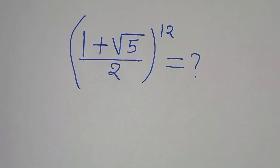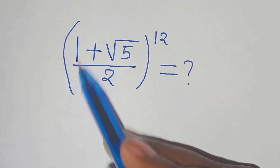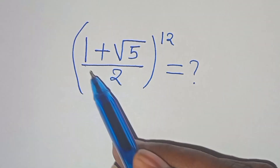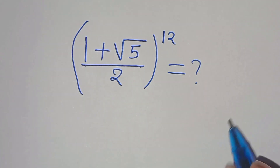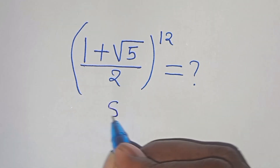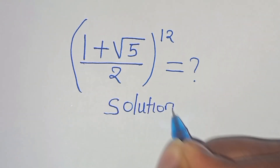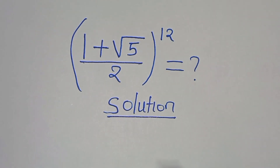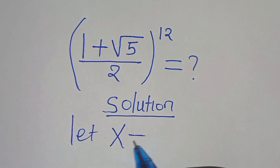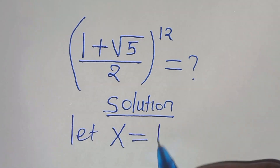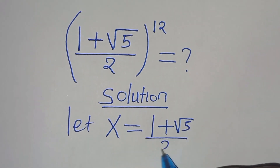Hello everyone, you are welcome to solve this nice math problem, which is 1 plus square root of 5 divided by 2, raised to the power of 12. So let's provide a solution. Now the first step is we write x to be equal to 1 plus square root of 5 divided by 2.